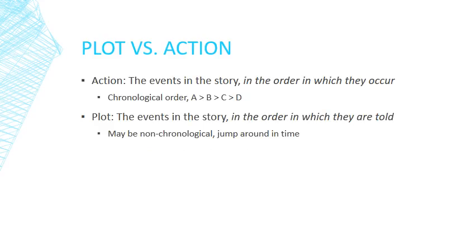An important distinction to make is plot versus action. Action is the events in the story in the order in which they occur — the chronological order of A to B to C to D: I woke up, I put on my clothes, I went to the store, I bought some milk. Now the plot is the events in the story in the order in which they are told. I might tell that story in a non-chronological way — for example, starting by saying: 'I was driving to the store to get some milk, and I remembered how I felt when I woke up that morning and put on my clothes.' So the plot is not necessarily chronological.